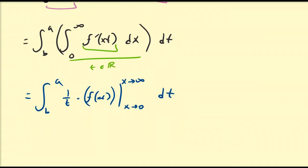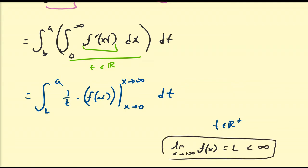We're assuming here that t is a positive number. So as x goes to infinity, xt is going to go to infinity as well. By our assumption, f(x) as x goes to infinity is a finite number L, which means as x goes to infinity, f(xt) also goes to L. And as x goes to 0, it doesn't matter whether t is positive, negative, or 0 — t times 0 is going to be 0, and then we're going to have f(0).